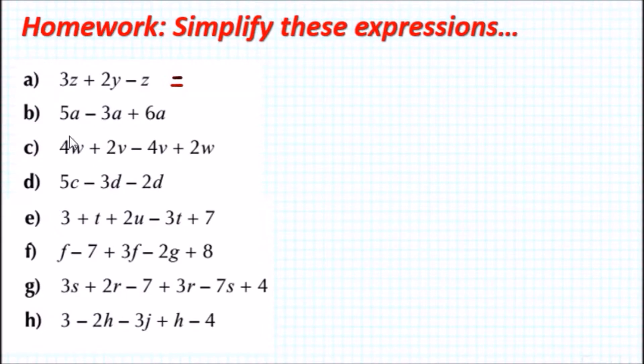What do we have? 3z + 2y - z. The first thing you want to do is do 3z take away z because they're like terms. Z just means one z, so 3 take away 1 is 2, so that's 2z. And because you only have a single 2y, you just copy it because there's no other like terms. That's it.